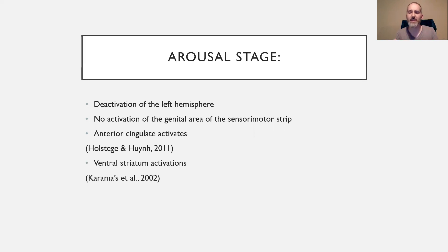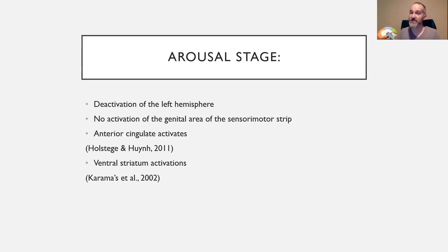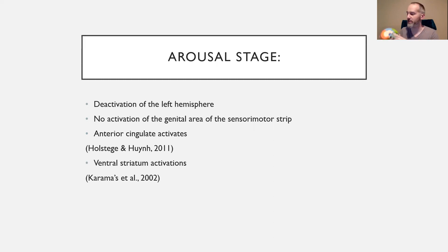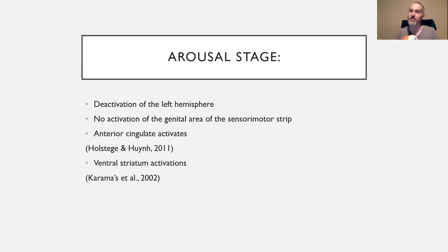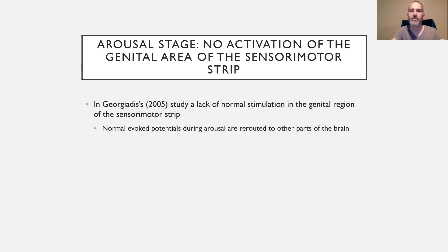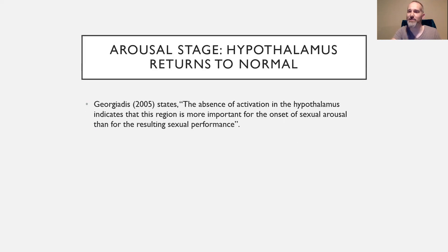We see the anterior cingulate activate — right underneath the corpus callosum in the front — which relates to emotional regulation and coordinating other structures. During orgasm, this may be responsible for readying other brain parts. We also see the ventral striatum activate, which contains the nucleus accumbens and is responsible for our sense of pleasure. That part of the brain starts to increase its activation throughout the process through orgasm.